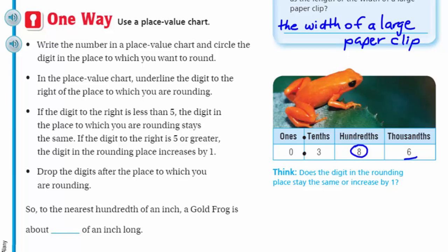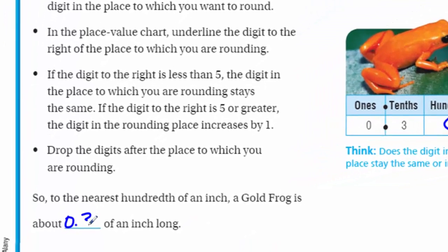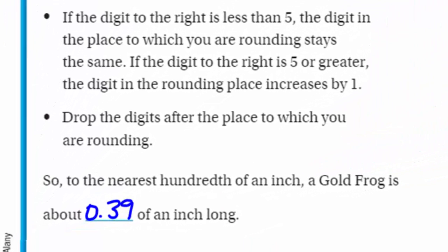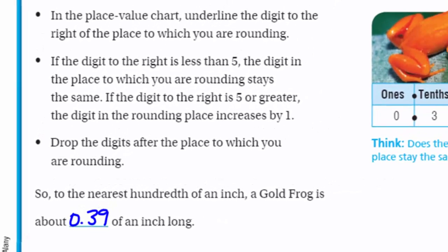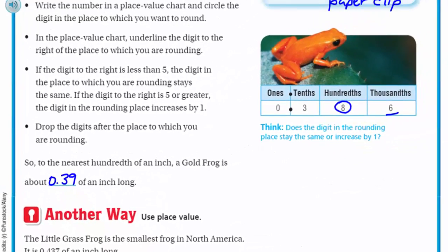To the nearest hundredth of an inch, a gold frog is about 39 hundredths. Typically in math we put a zero in the ones place when we have a decimal that follows - so 0.39. I think it's just a standard way to make sure it's easier to see that it's a decimal.